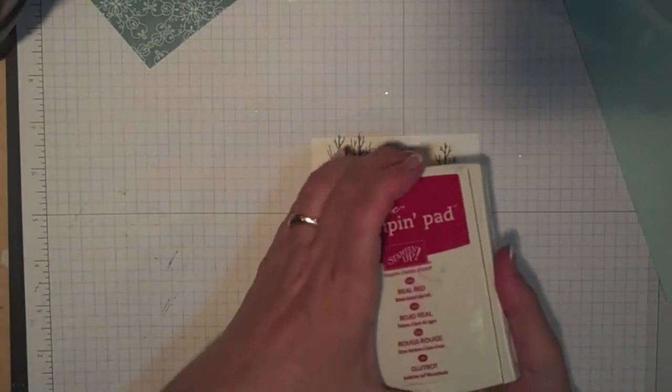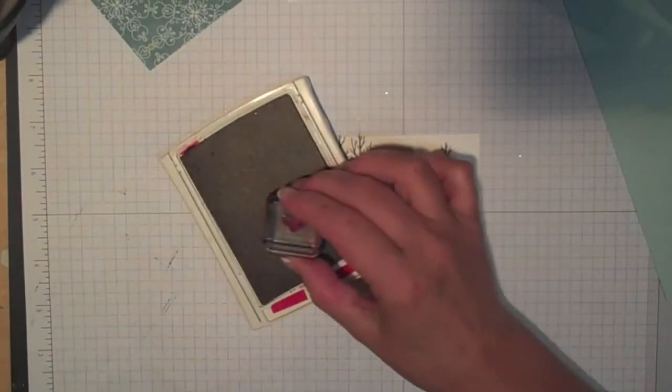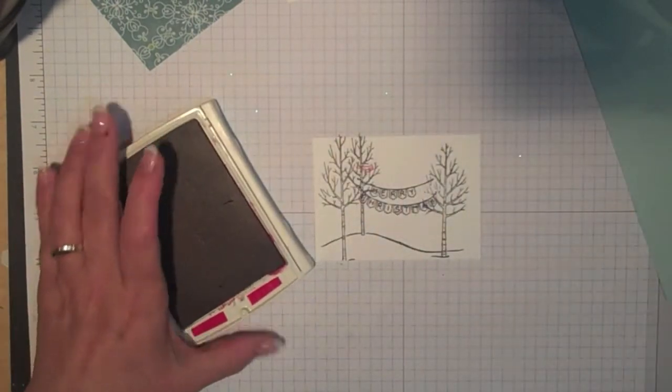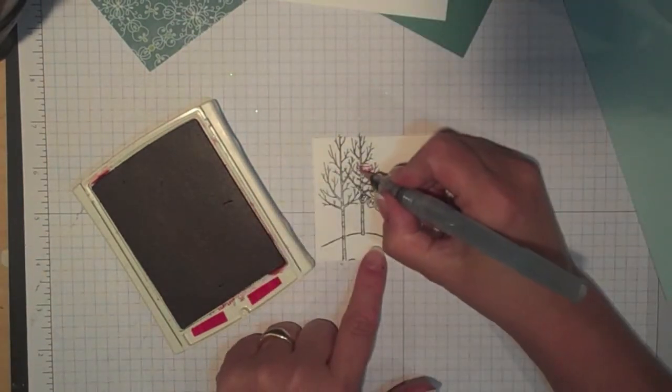Lastly I've got some Real Red ink here and I'm going to stamp the bird, put them on the tree like that, and I'm going to take my aqua painter and just color him in.